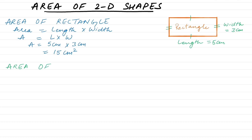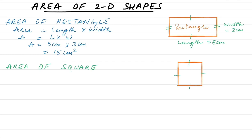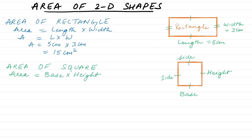Now let's find the area of a square. Let's draw a square first. We know that all the sides of the square are equal. The bottom side is called the base and this is the height, or we can also call it the side. There are two ways we can find the area of a square: first, area is equal to base times height; also, we can do side squared.